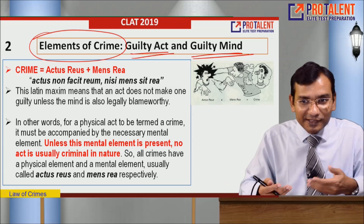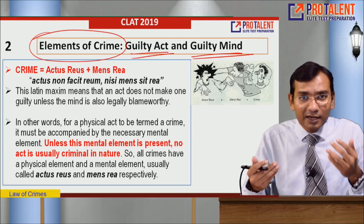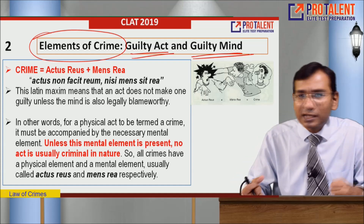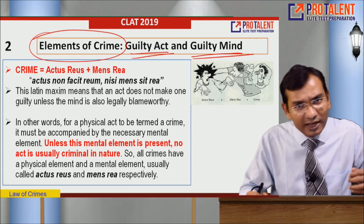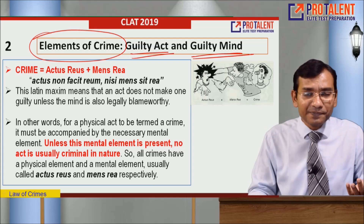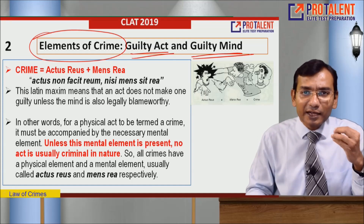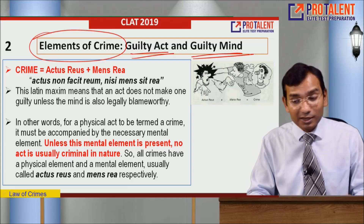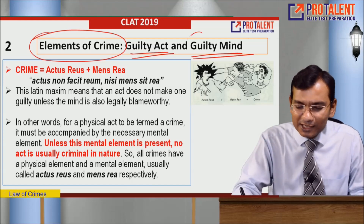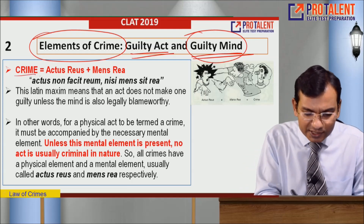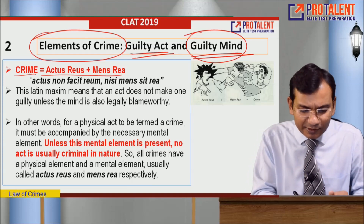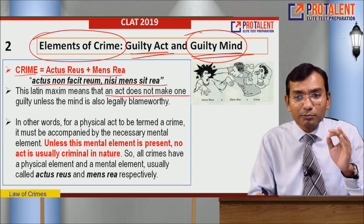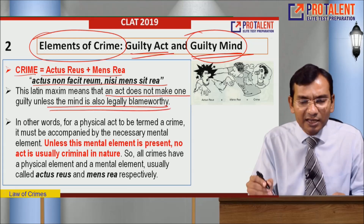Without a guilty mind, how could someone commit a guilty act? For example, if someone was harmed because of my negligence - I was riding a bike and due to my negligence, without any guilty mind, I scratched a Mercedes - I would have to pay compensation to the other person, that's it. I will not be punished. But if I did something knowingly and intentionally, with a guilty mind, then there is a problem. So crime equals actus reus plus mens rea.